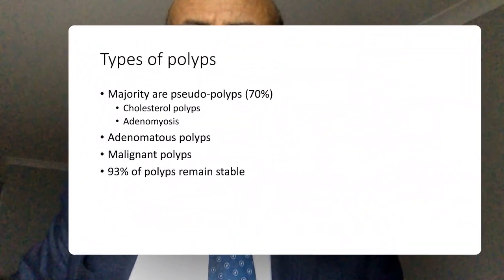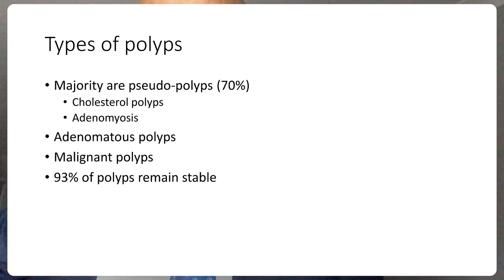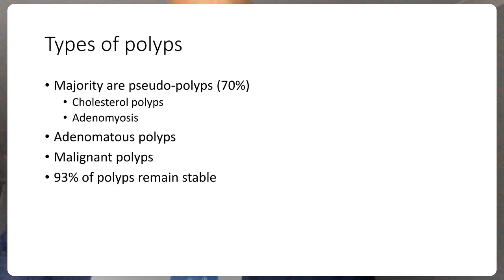Stepping back to the types of polyps: the overwhelming majority — more than 70% — are actually pseudopolyps. These are cholesterol polyps, just cholesterol deposits in the mucosa of the gallbladder that appear elevated on ultrasound scan. The other form is adenomyosis, which is a totally benign condition where the glandular layers of the mucosa form nodules and infiltrate the muscular wall — the glands grow inside the muscles. So the majority of polyps fall into one of these two totally benign categories and will not require any form of treatment.